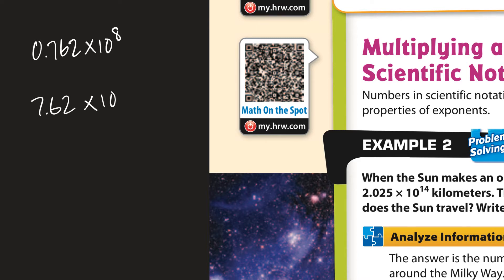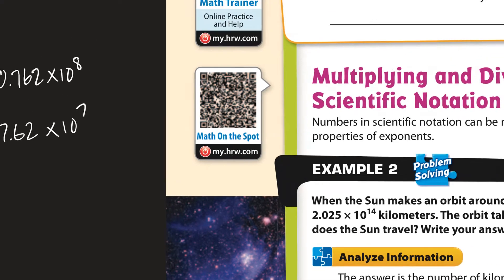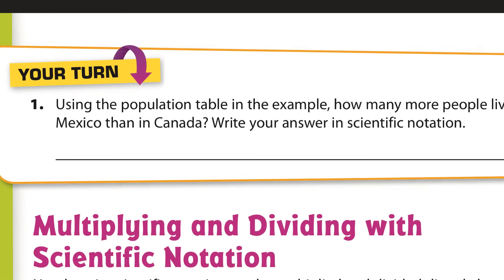Now, what this means is I have to move, this 8 means I have to move the decimal 8 times to the right. But if I have it here, I only have to move it 7 times to the right now because it's already been moved once. So that would be 7 times. So that would be my answer. And that is right here.